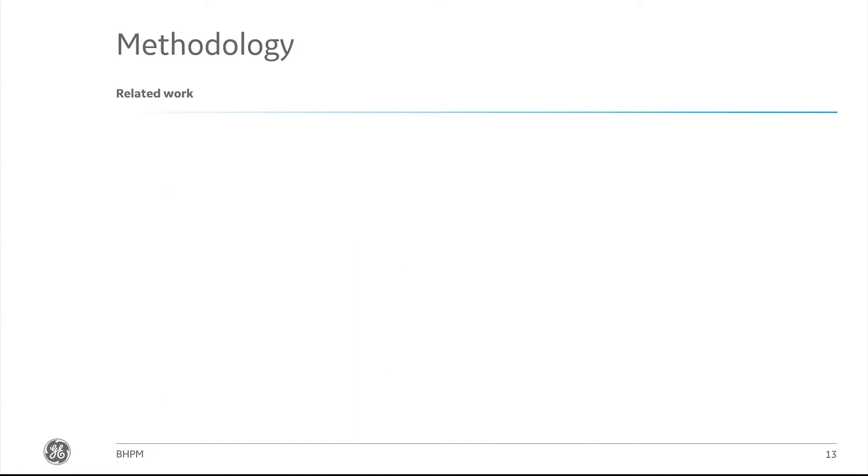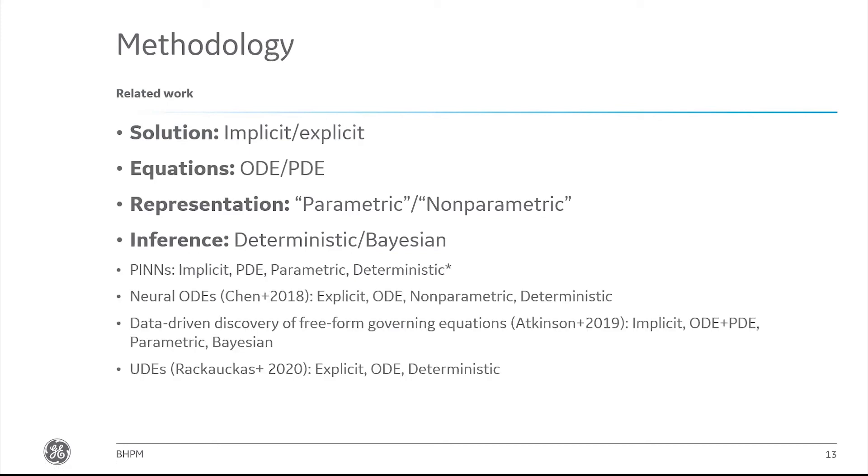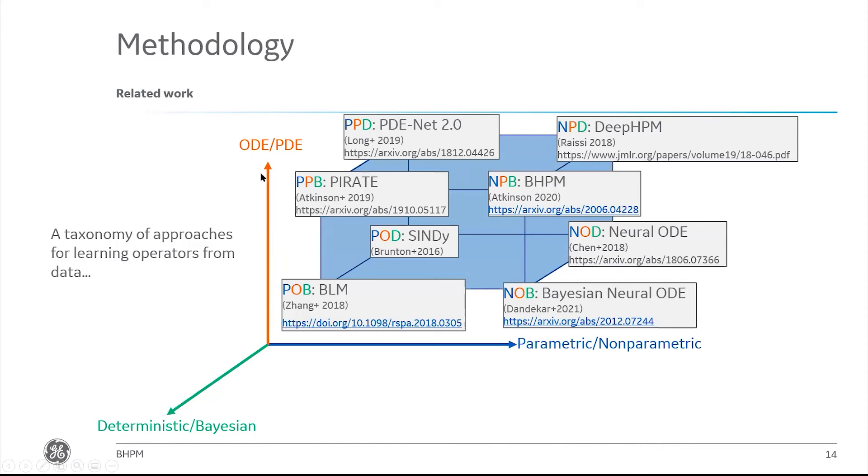I think it's important to understand this solution in the context of other related work. One way to think about it is to ask a few questions about various physics learning approaches: whether the solution is represented explicitly, think via like an ODE solve, or implicitly like we're doing here; whether we're looking at ODEs or PDEs; whether our representation of the physics is parametric or non-parametric; and whether our inference is deterministic or Bayesian. There are a lot of different works that have been done in the space recently that can be summarized in this little cube where I have the three different axes on those questions. Basically every corner of this has been filled at this point by some methodology or another.